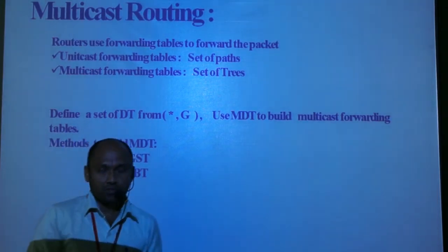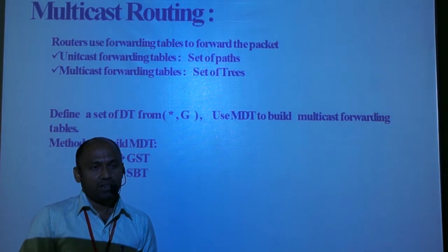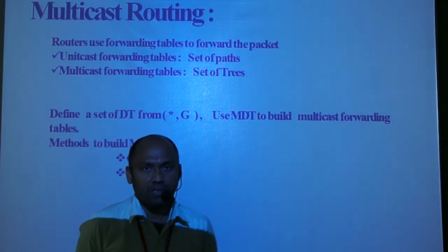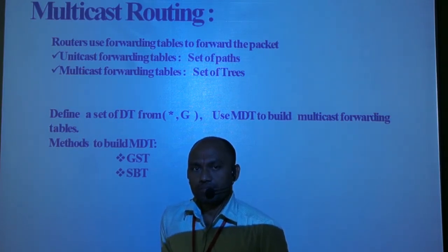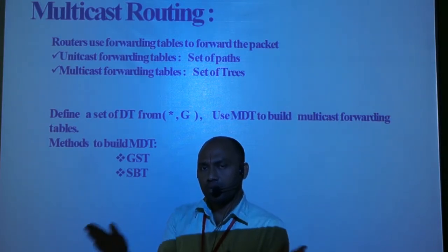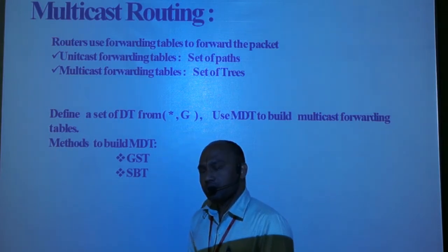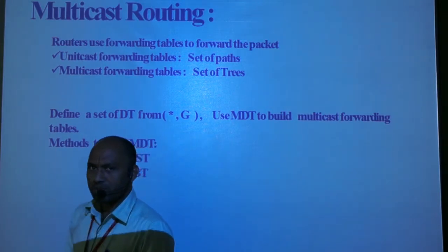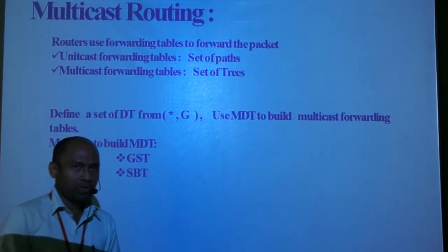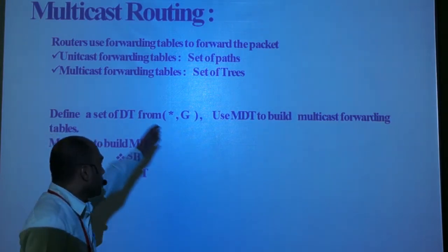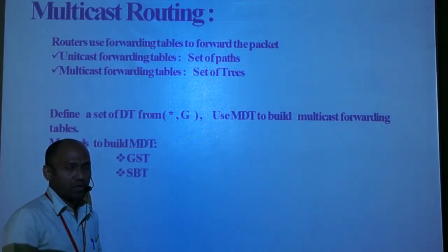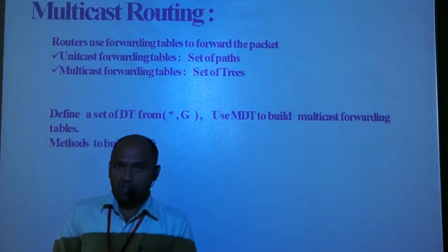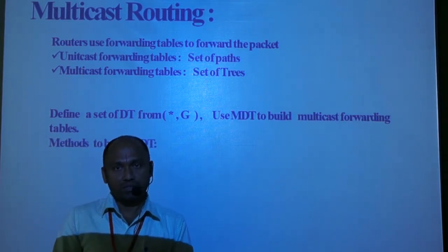The next question concerns routing. What is involved in routing for multicasting? The task of finding distribution trees is called multicast routing. Routers forward packets with respect to forwarding tables, and there are two types: unicast forwarding tables and multicast forwarding tables. Multicast uses trees to forward packets. There are two types of trees, and the question is what their role is in the multicast routing process.